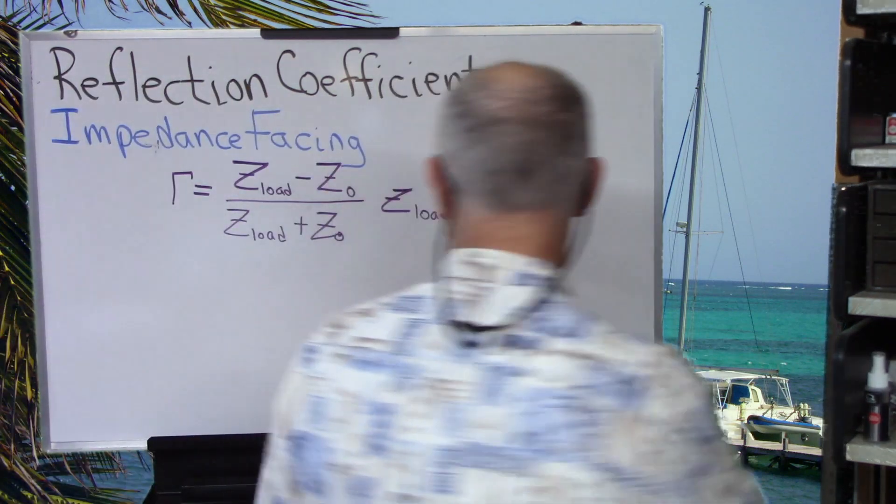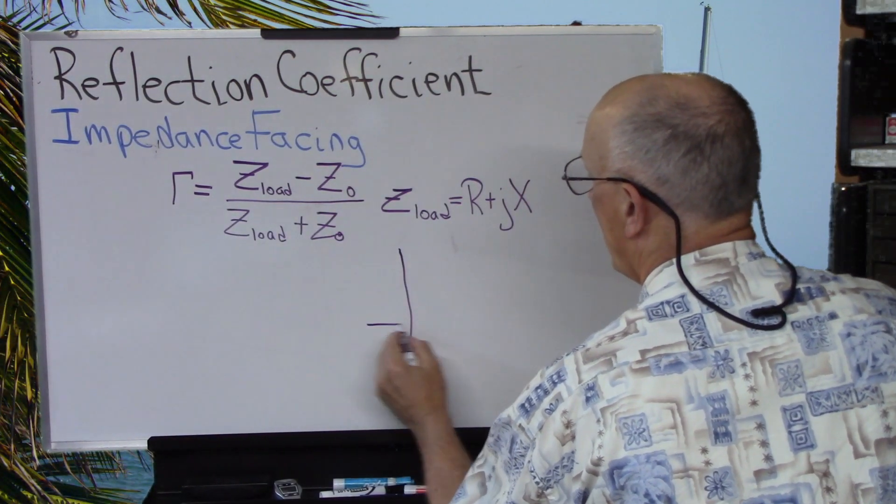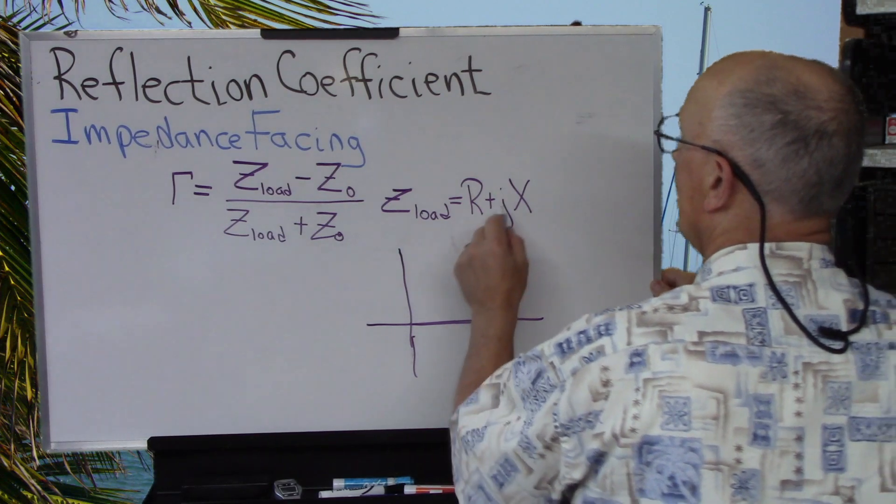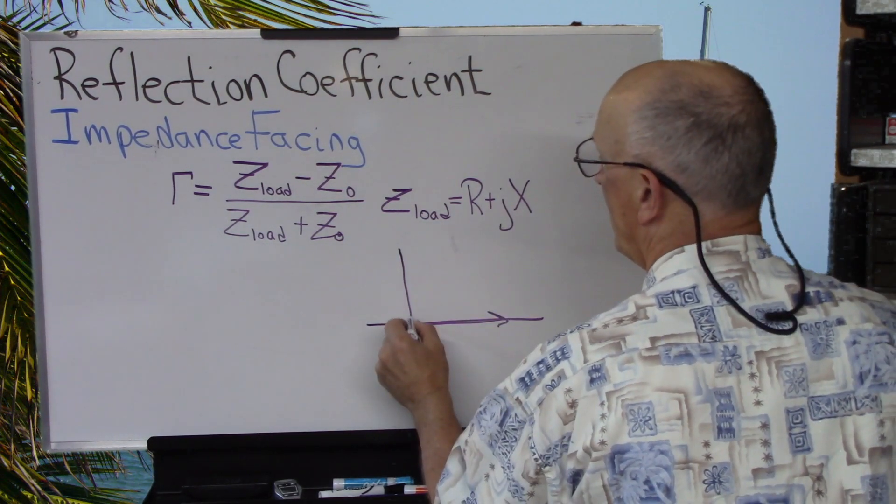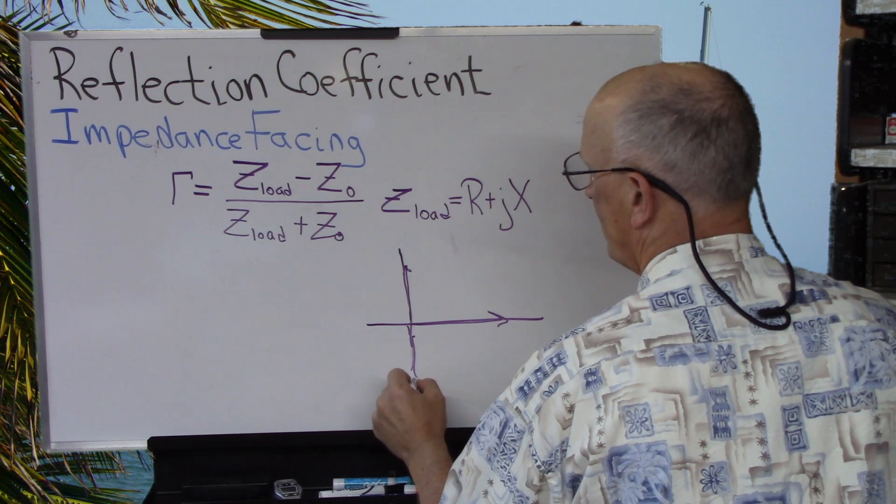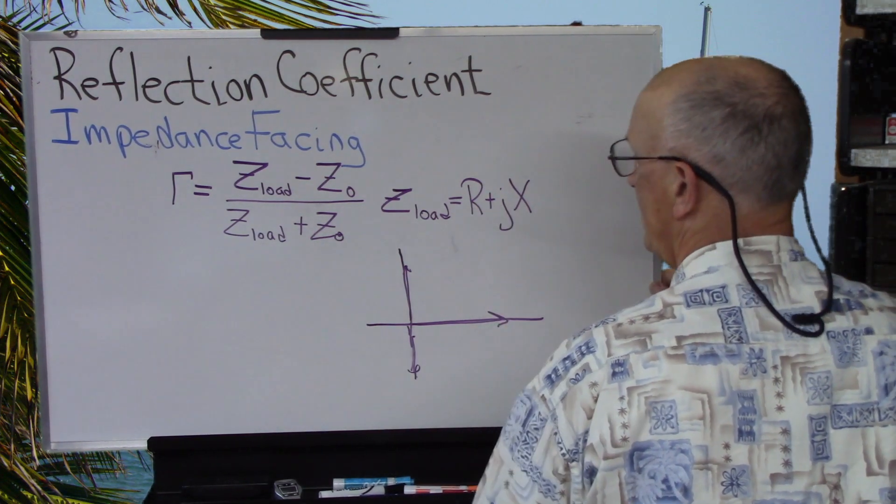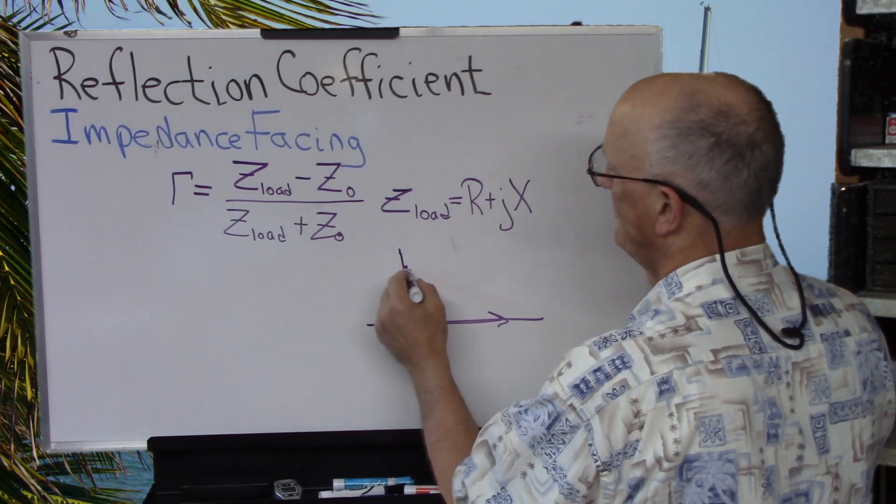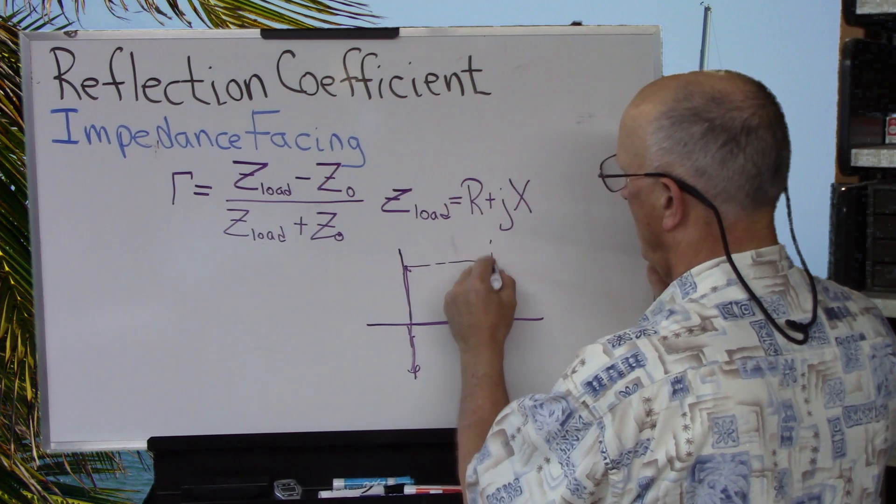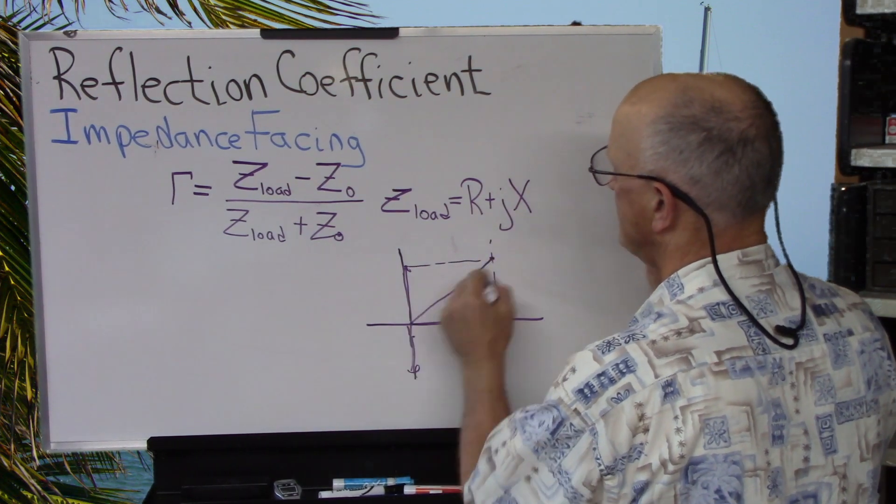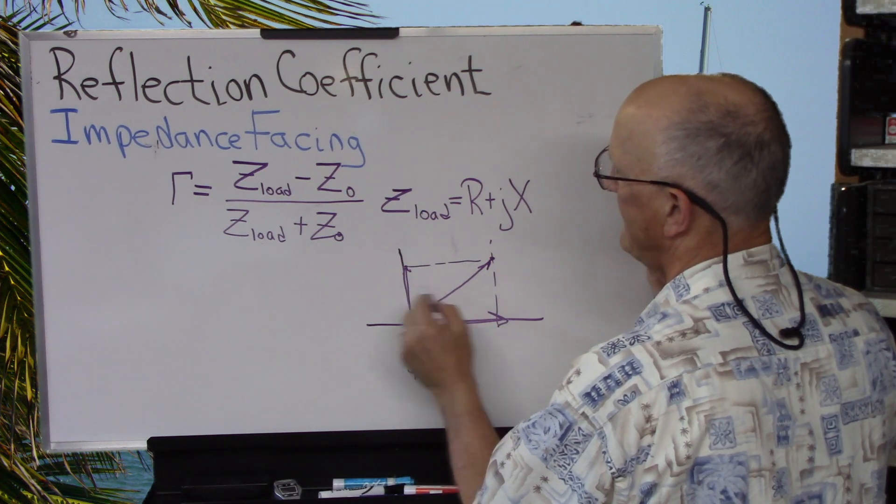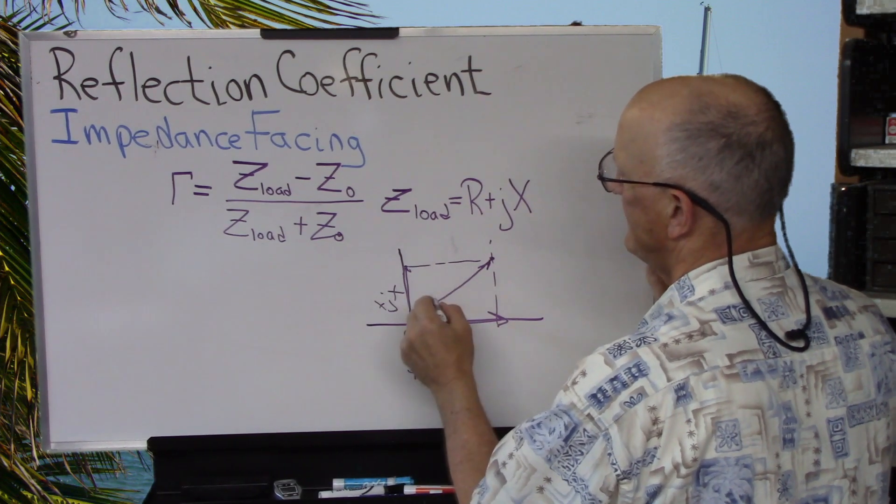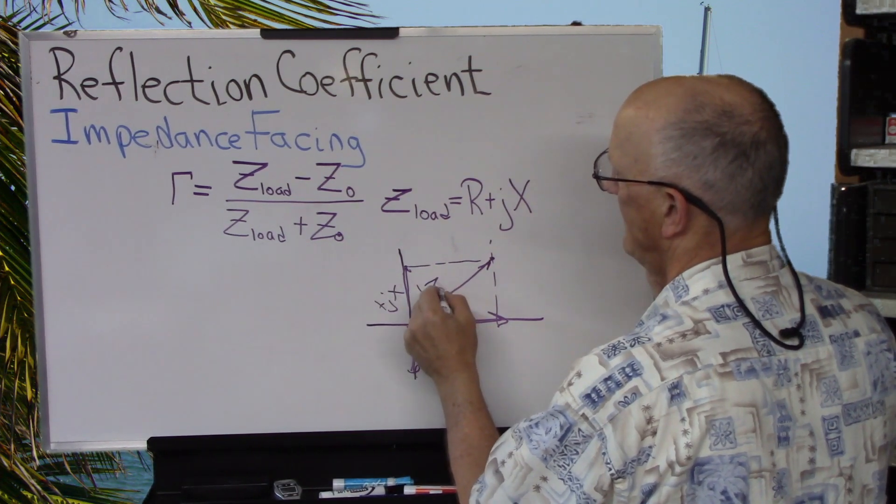And then when we look at this, this is plotted with the real part on the horizontal axis. And this part here will be either on the positive or negative axis, depending upon what this sign is. And then when we're talking about the magnitude, this creates this vector here. And this is the magnitude. So this is R. This is plus Jx. And this is the magnitude of the impedance.